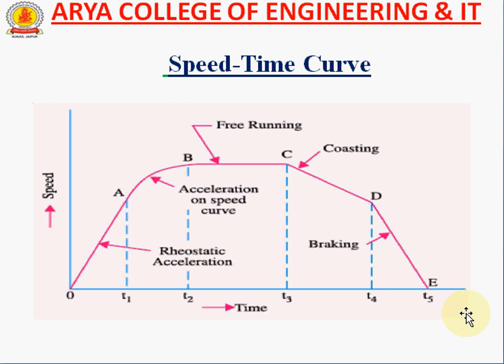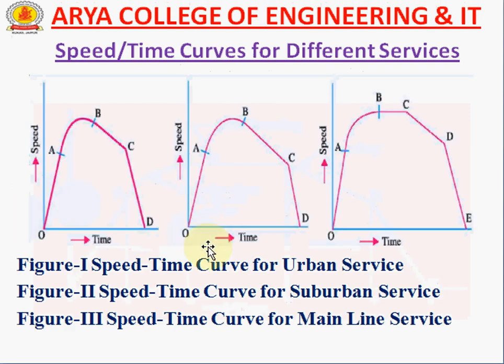The five phases are: first, acceleration; second, speed curve; third, free running; fourth, coasting; and fifth, braking. According to the railway system, all distances are categorized into three types: urban, suburban, and main line service. Urban means the train runs in city areas with very short distances between stations. Suburban refers to township areas, and main line refers to long-distance routes covering maximum kilometers.